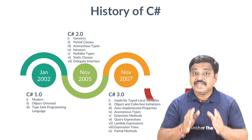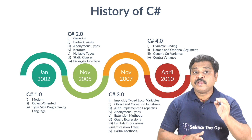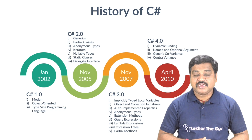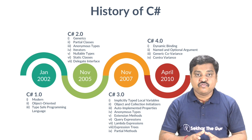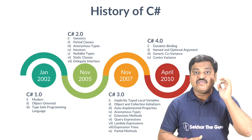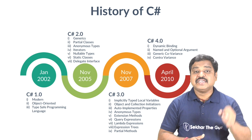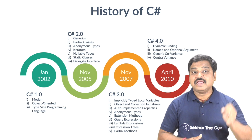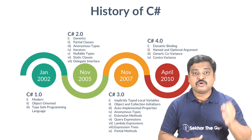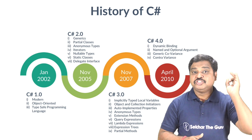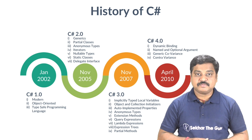In late 2010, C Sharp 4.0 was introduced with .NET Framework 4, with very useful features such as dynamic binding, named and optional arguments, and generic covariance and contravariance.